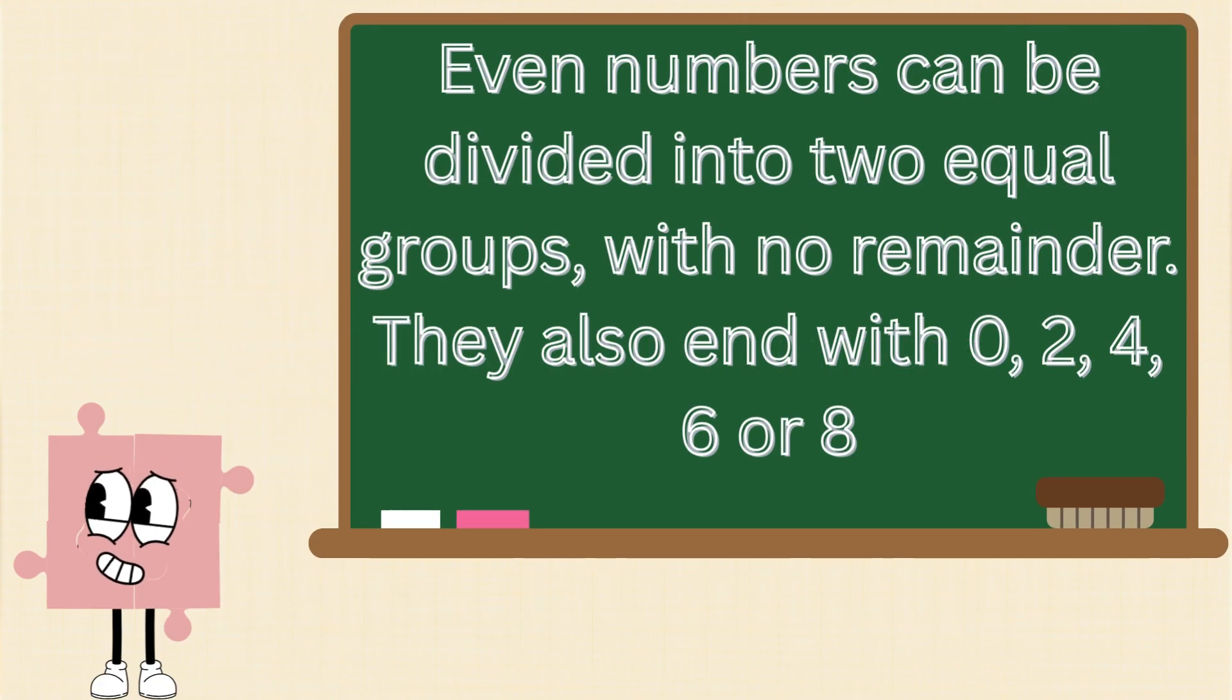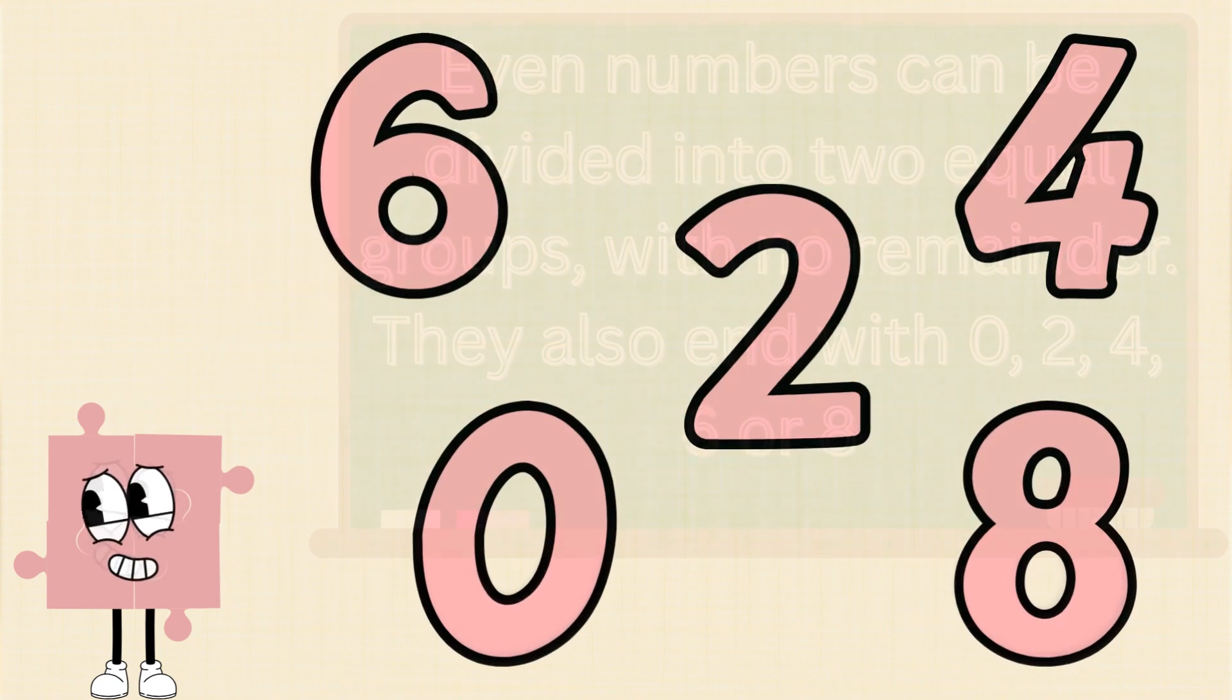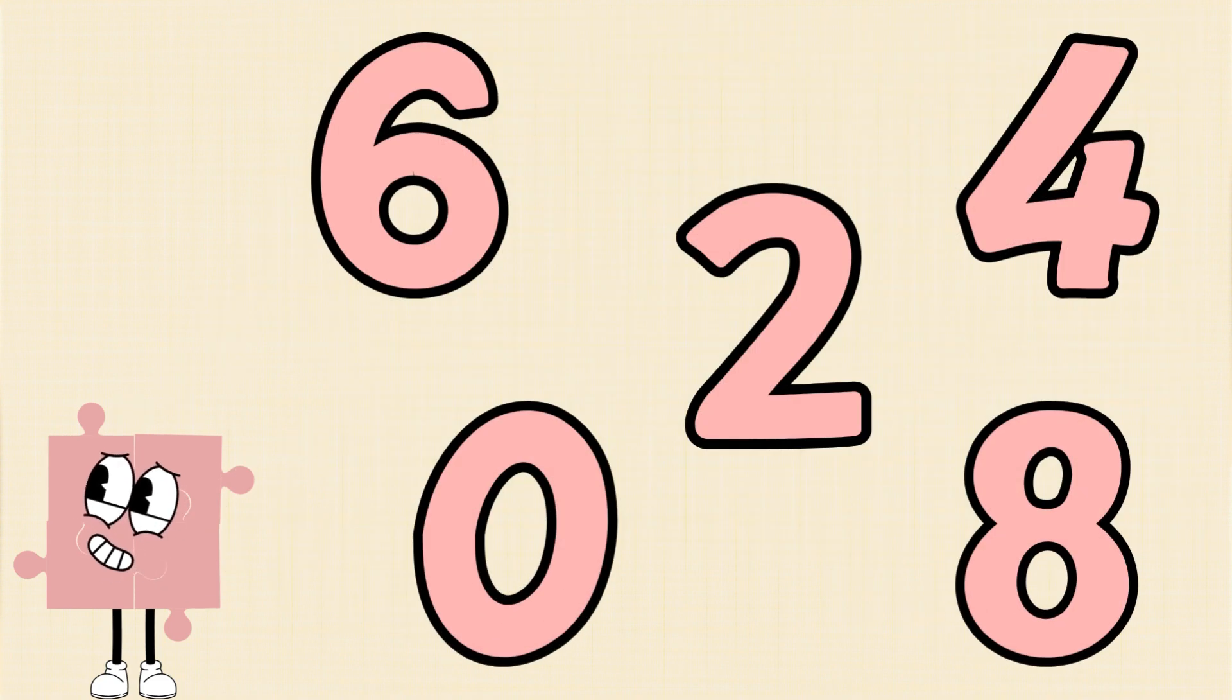Even numbers can be divided into two equal groups, with no remainder. They also end with 0, 2, 4, 6 or 8.